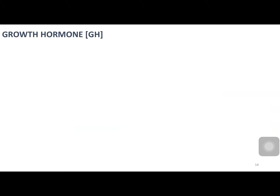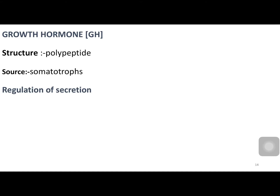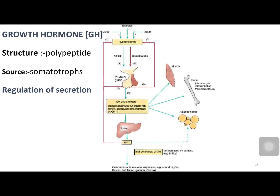Now coming to the most important hormone secreted from the anterior pituitary — growth hormone. Growth hormone is a peptide hormone secreted from somatotrophs. The main stimuli for production of growth hormone are exercise, physical stress, and good amount of sleep. People and babies who don't sleep properly don't grow properly — that's why parents of babies who don't sleep properly complain of failure to thrive. Physical stress during exercise promotes production of growth hormone.